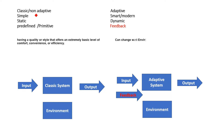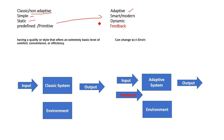The classic machine is also called the non-adaptive, simple, static. Here we predefine the system — what we actually want as output. The adaptive system is also called the smart or modern machine, dynamic machine. The difference between these two is that here we have feedback extra.